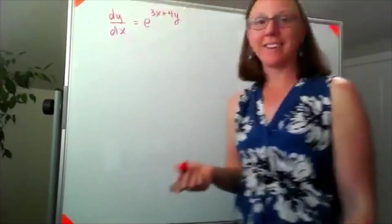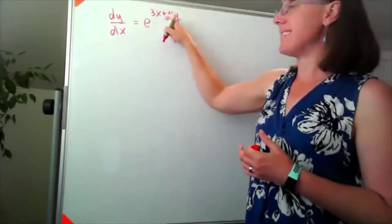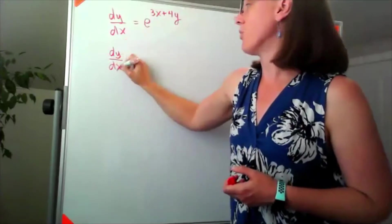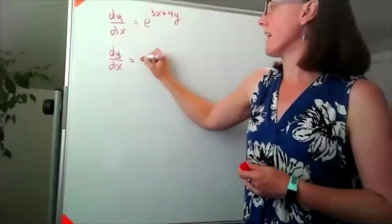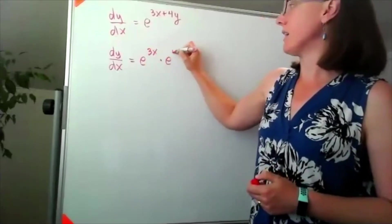All right, and the reason that I said it's separable is that I'm going to want to take that addition inside of the exponent and think about that as multiplication between two things. That's e to the 3x times e to the 4y.